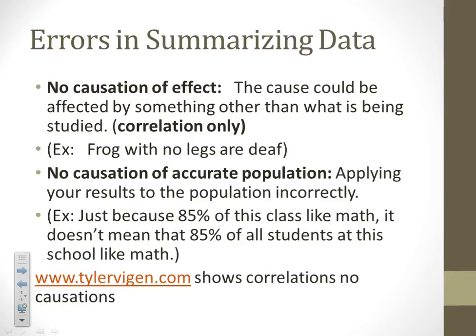For example: frogs with no legs are deaf. There's probably a correlation there, but it's not because the frog doesn't have legs that it can't hear — it's probably more likely that there were birth defects or something. So there's correlation, but not causation.